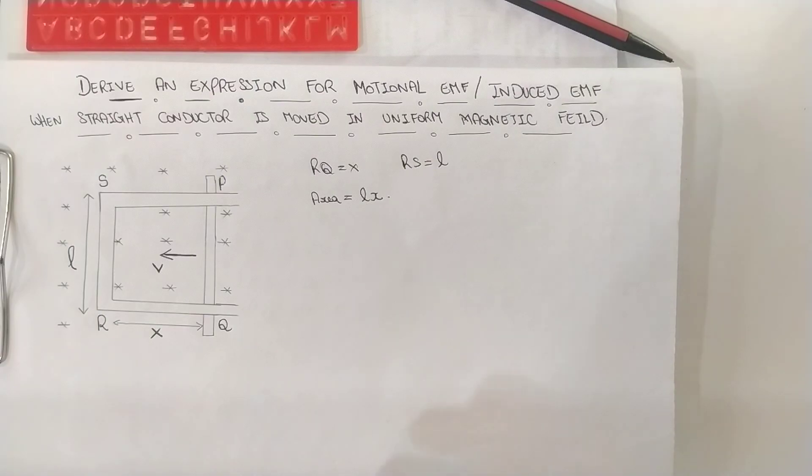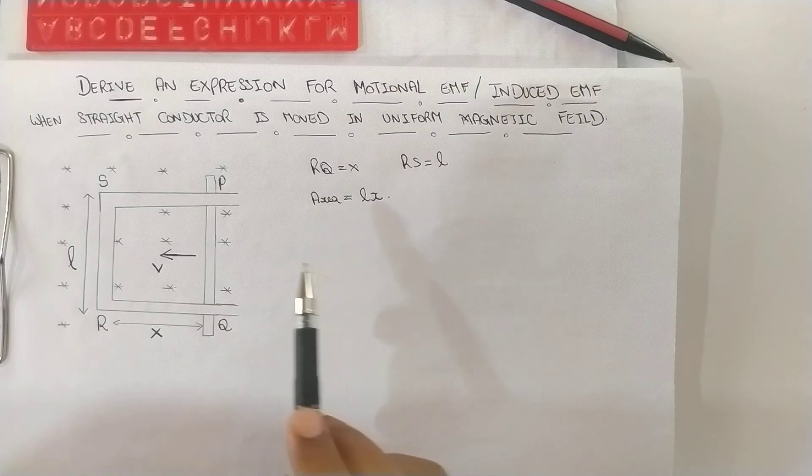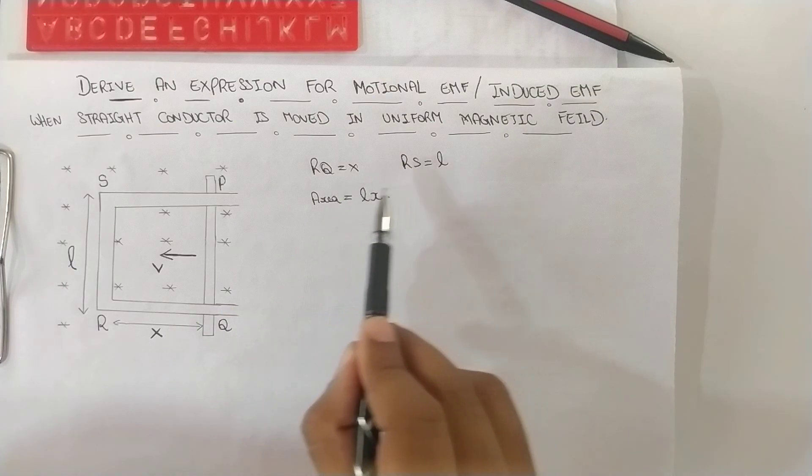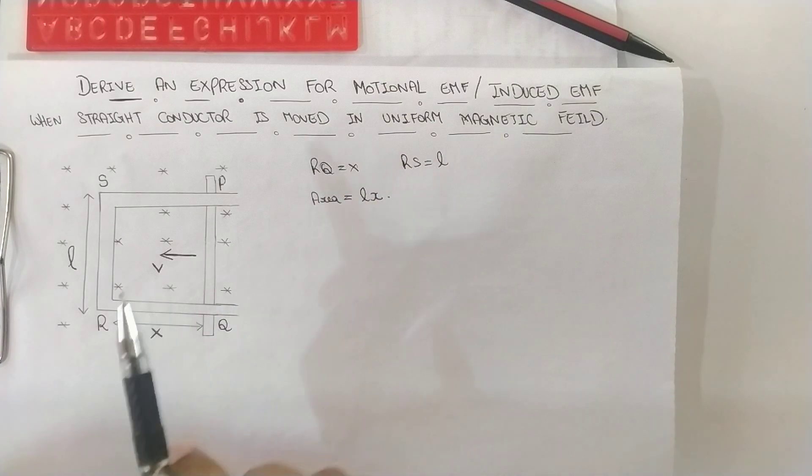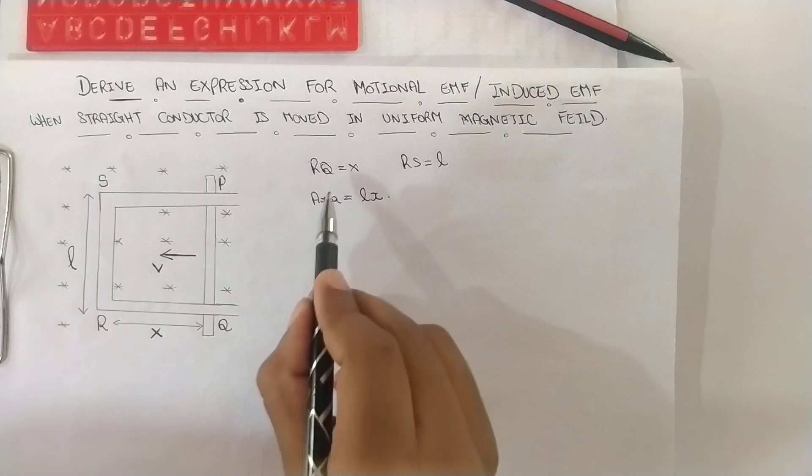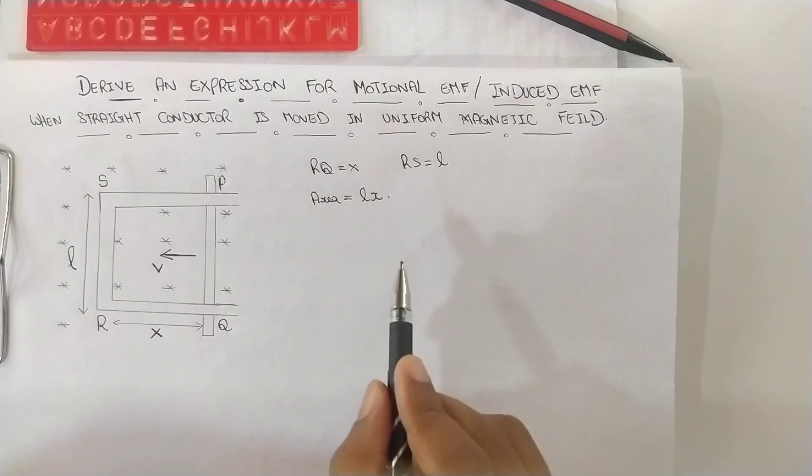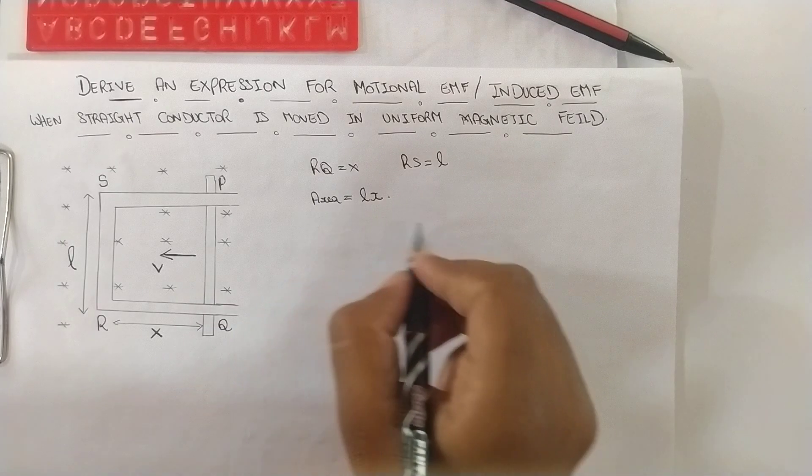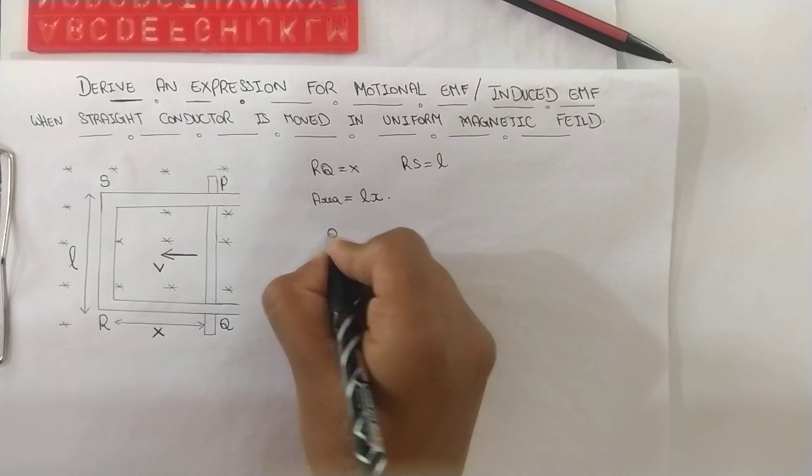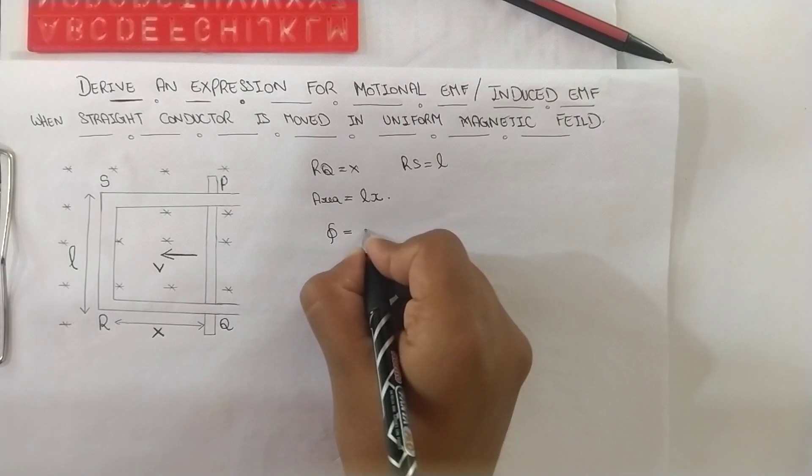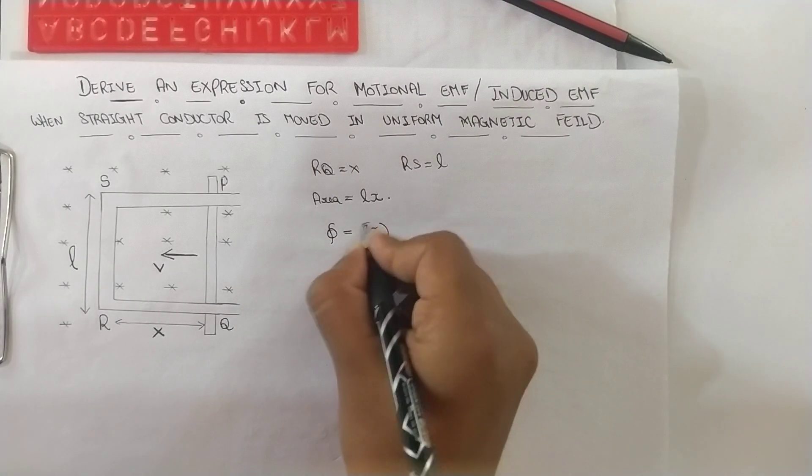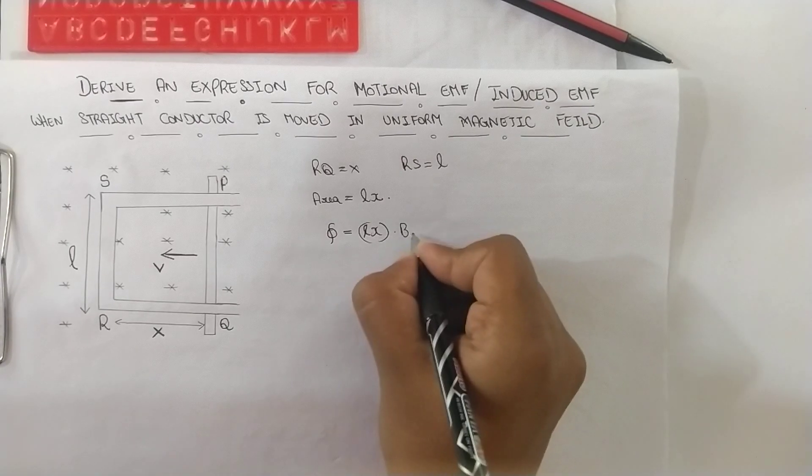Now moving to the important core part. As you can see here, RS is the length and RQ is X. So multiplying they will give area, and area into magnetic field gives us the flux. Area LX into magnetic field B.